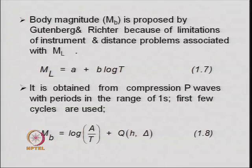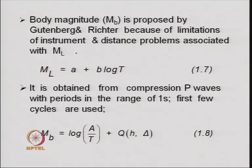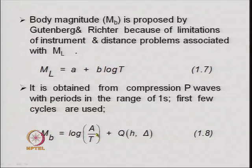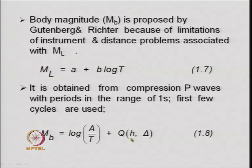The body magnitude MB is proposed by Gutenberg and Richter because of limitations of instrument and distance problems associated with local magnitude. It is obtained from compression P waves with periods in the range of one second — the first few cycles are used to obtain the body magnitude. The relationship between body magnitude and amplitude of ground displacement is given by an equation where t is the period of the wave, delta is the epicentral distance, and h is the focal depth.